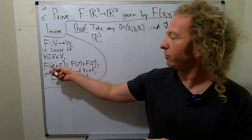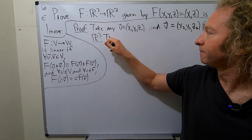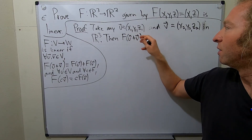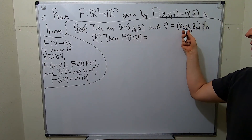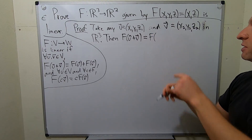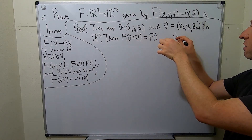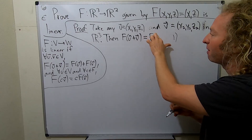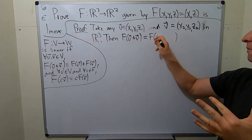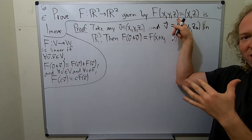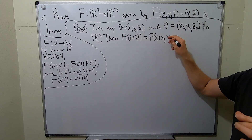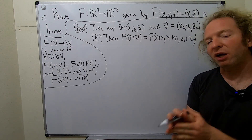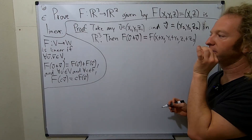So now we have to look at f of u plus v and see what happens. So f of u plus v — well, we can go ahead and add these components. When you add u and v you just add the components, you get (x1 plus x2, y1 plus y2, z1 plus z2). So we're just directly applying the definition — that's how you do these proofs, you just carefully satisfy the definition.